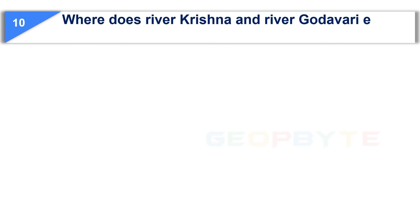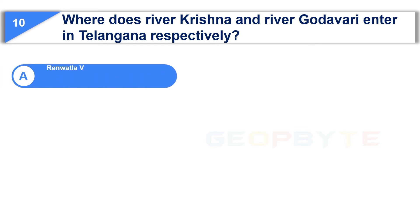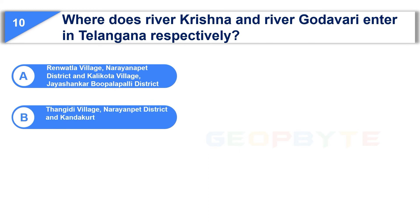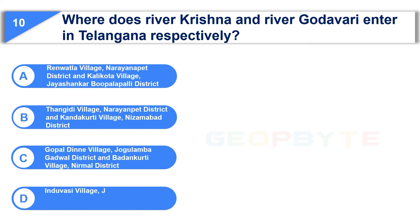The last question is: where do River Krishna and River Godavari enter Telangana respectively? Option A: Renvatla Village, Narayanpet District and Kalikota Village, Jayashankar Bhupalapalli District. Option B: Tangidi Village, Narayanpet District and Kandakurthi Village, Nizamabad District. Option C: Gopaldini Village, Jogulamba Gadwal District and Bandakurthi Village, Nirmal District. Option D: Induwasi Village, Jogulamba Gadwal District and Chirakunta Village, Komarambhim Asifabad District.